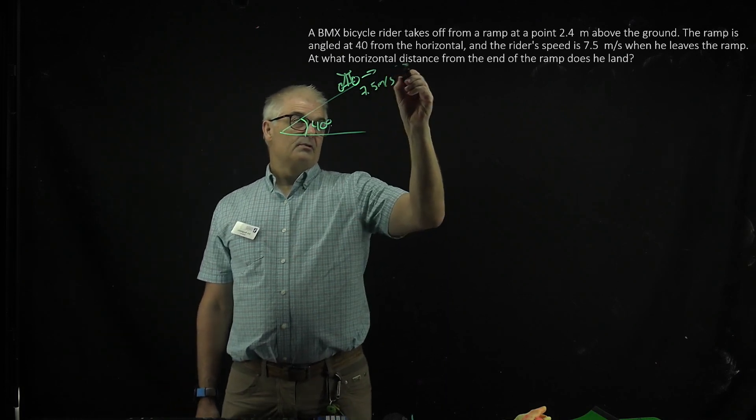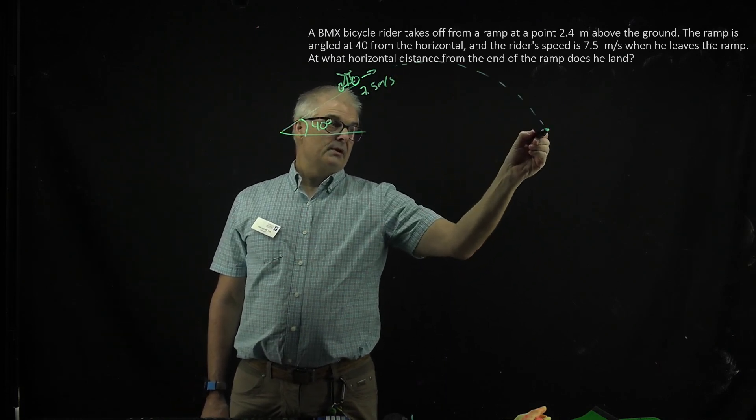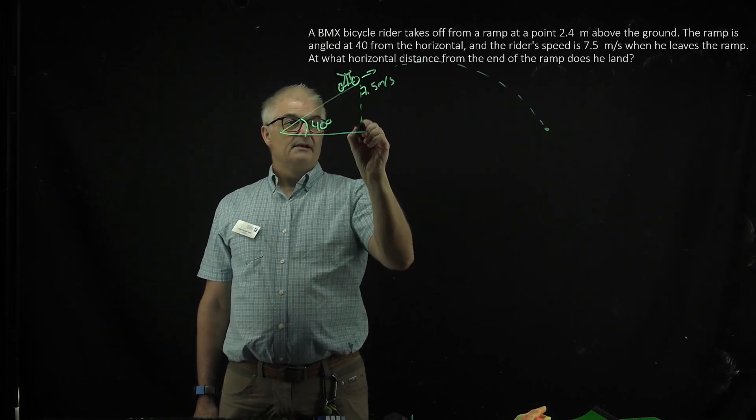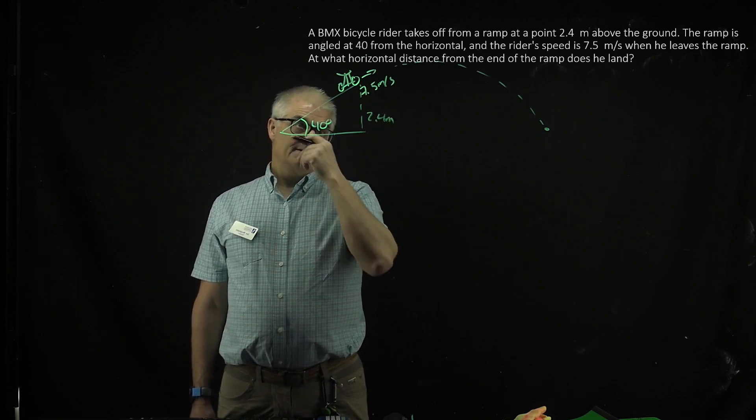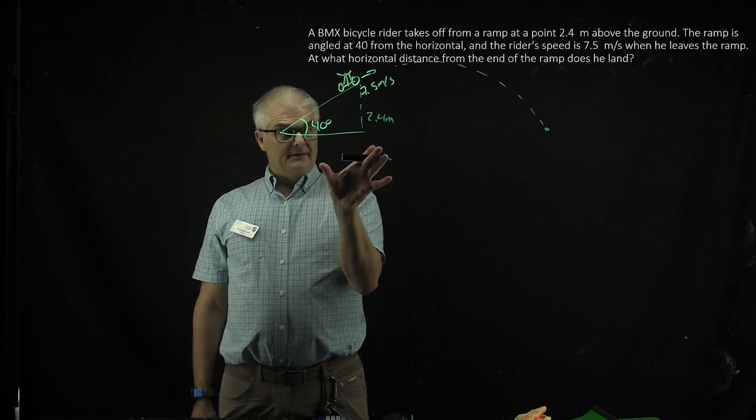And what's going to happen, of course, is he's going to land somewhere over here, but he's leaving. This height is 2.4 meters. So this is an uneven ground problem.